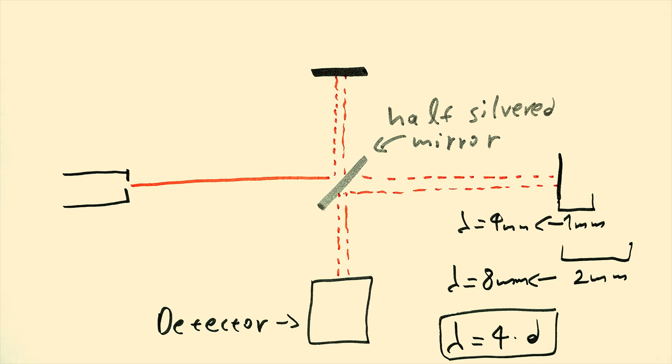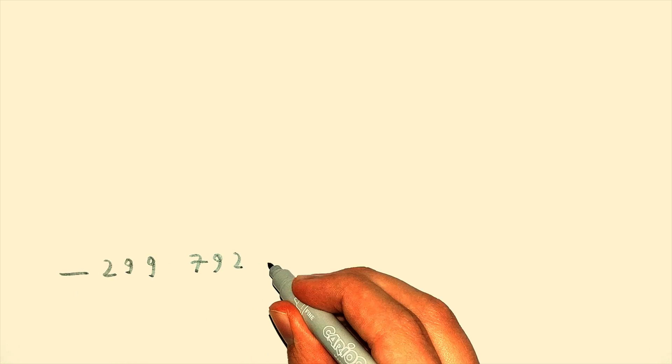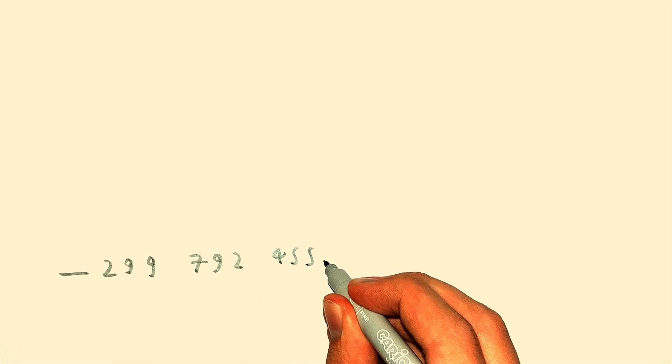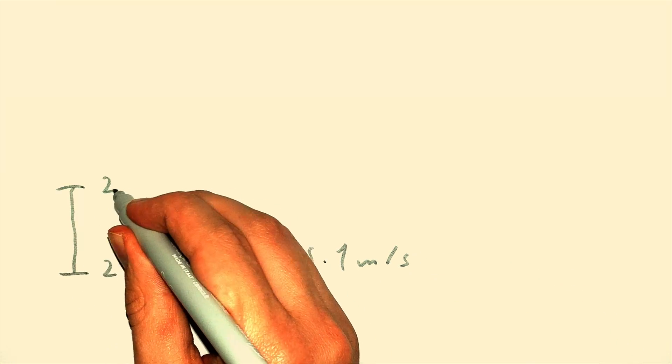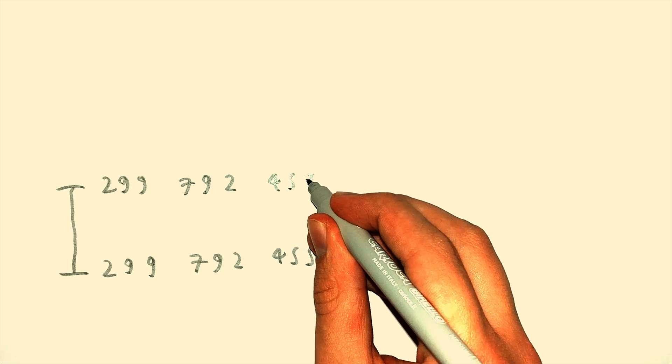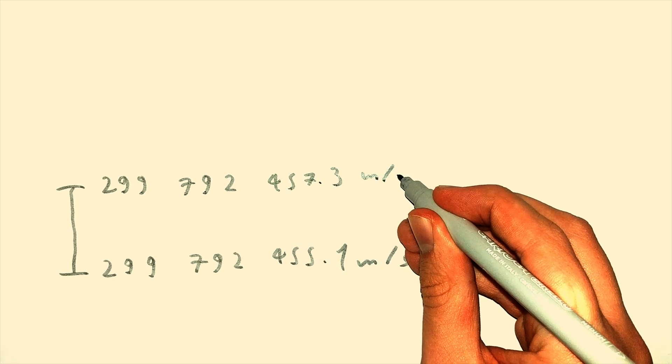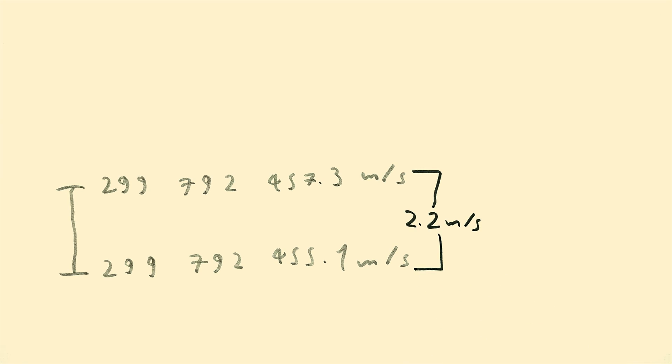So we did this, we multiplied it with a frequency, and what did we find? A number between 299,792,455.1 meters per second, and 299,792,457.3 meters per second, which means a 2.2 meters per second difference, which is not bad, but not good enough.